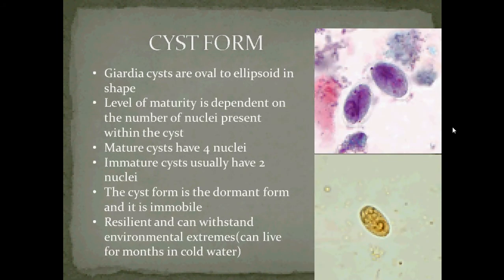The cyst form: Giardia cysts are oval to ellipsoidal in shape, and their level of maturity is dependent on the number of nuclei present within the cyst. Mature cysts have four nuclei, whereas immature cysts usually have two nuclei. The cyst form is dormant and immobile, but resilient — it can withstand environmental extremes and can live for months in cold water.